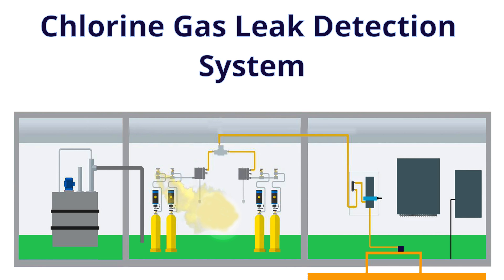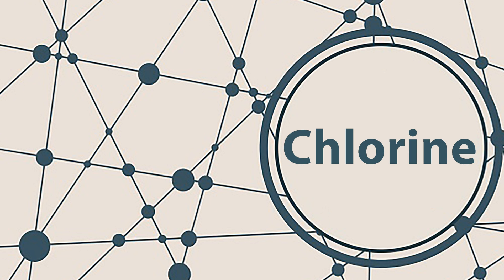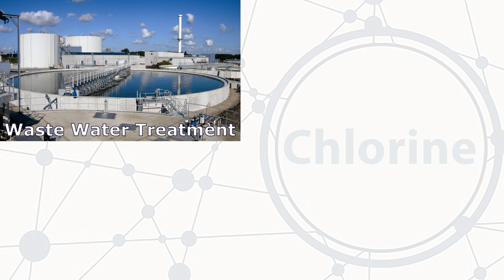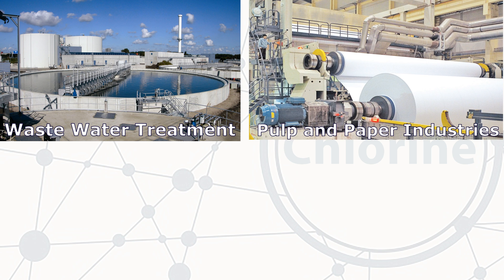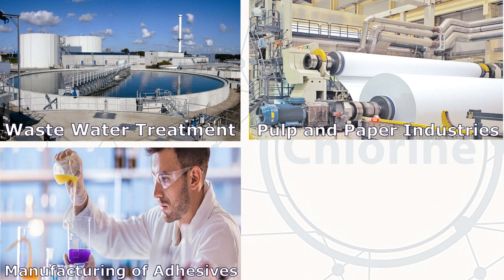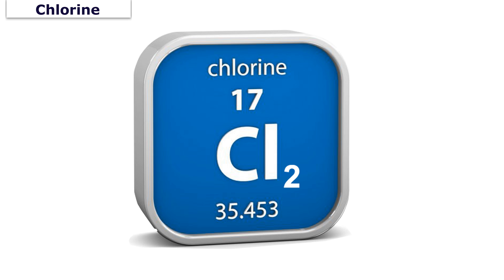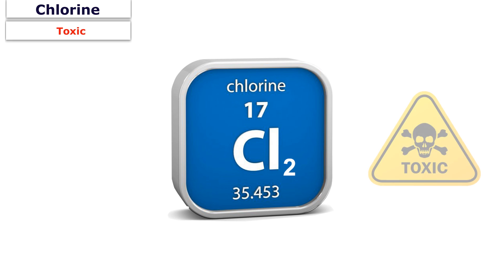Chlorine gas leak detection system. Chlorine is a very common chemical used for a variety of purposes, such as to disinfect water in industrial and sewage plants, as a bleaching agent during the manufacturing of paper or cloth, in creation of compounds in manufacturing processes, and as a reagent. It is also regularly used in pharmaceutical and agrochemical production. Chlorine is identified by the symbol Cl2.